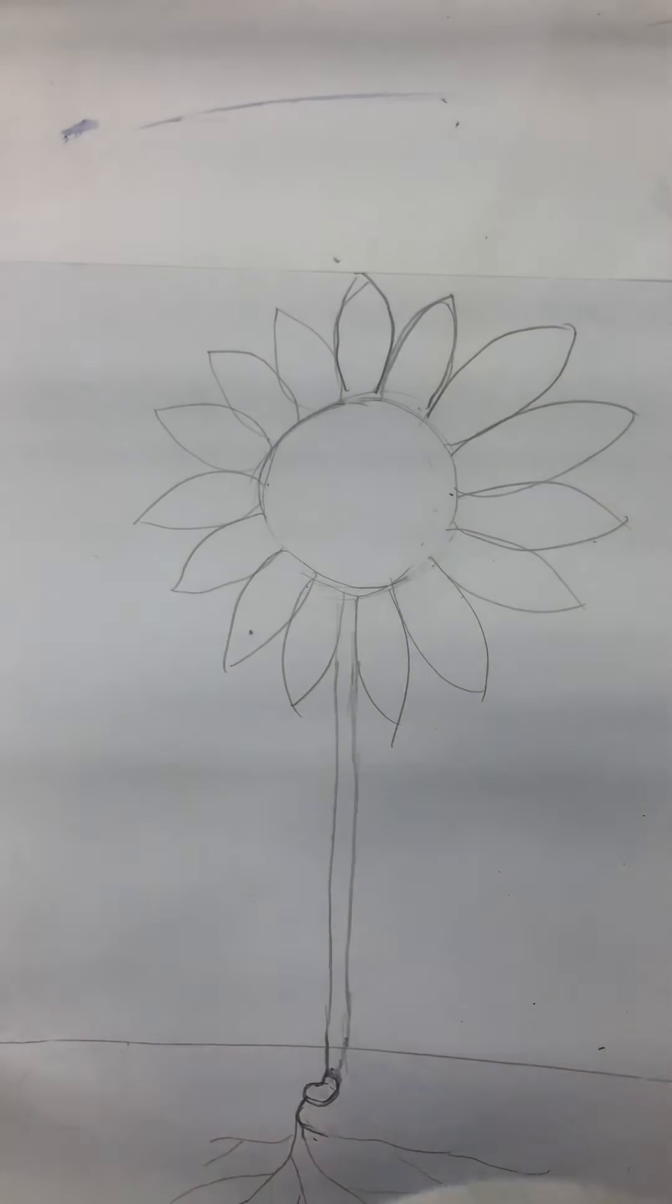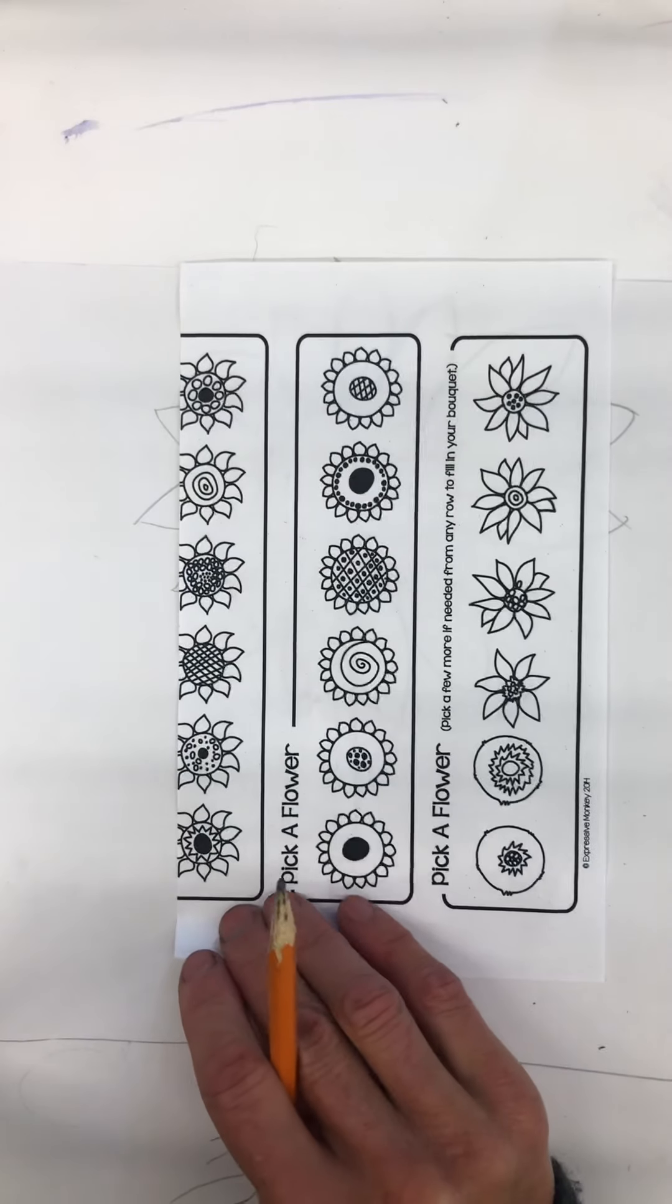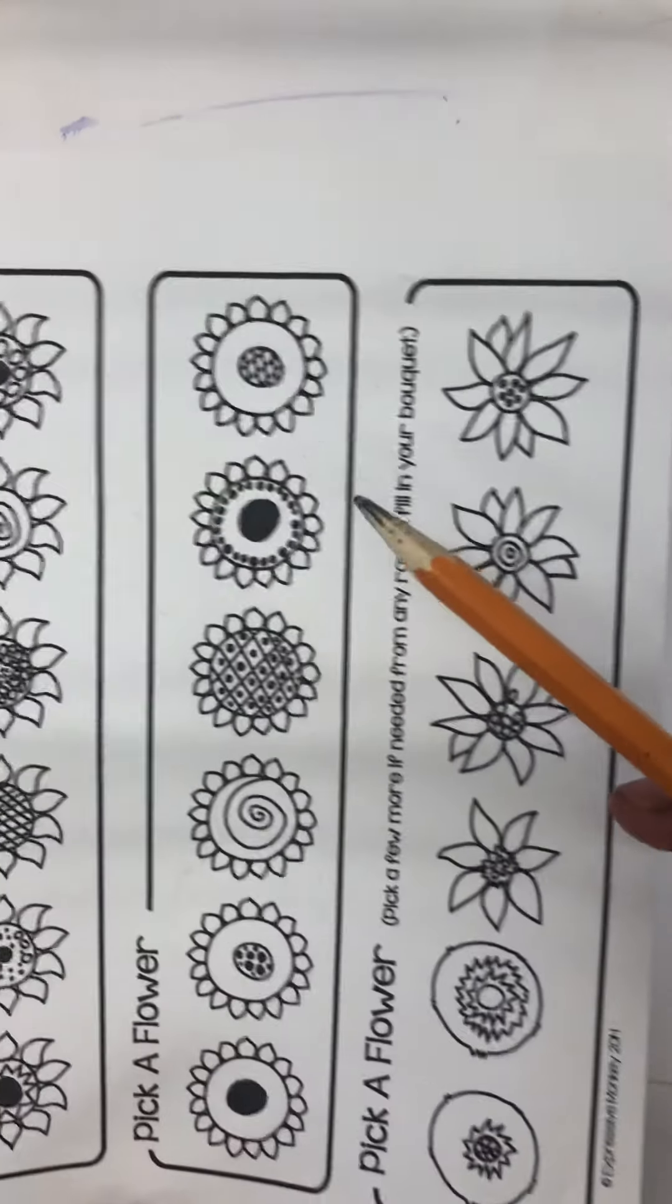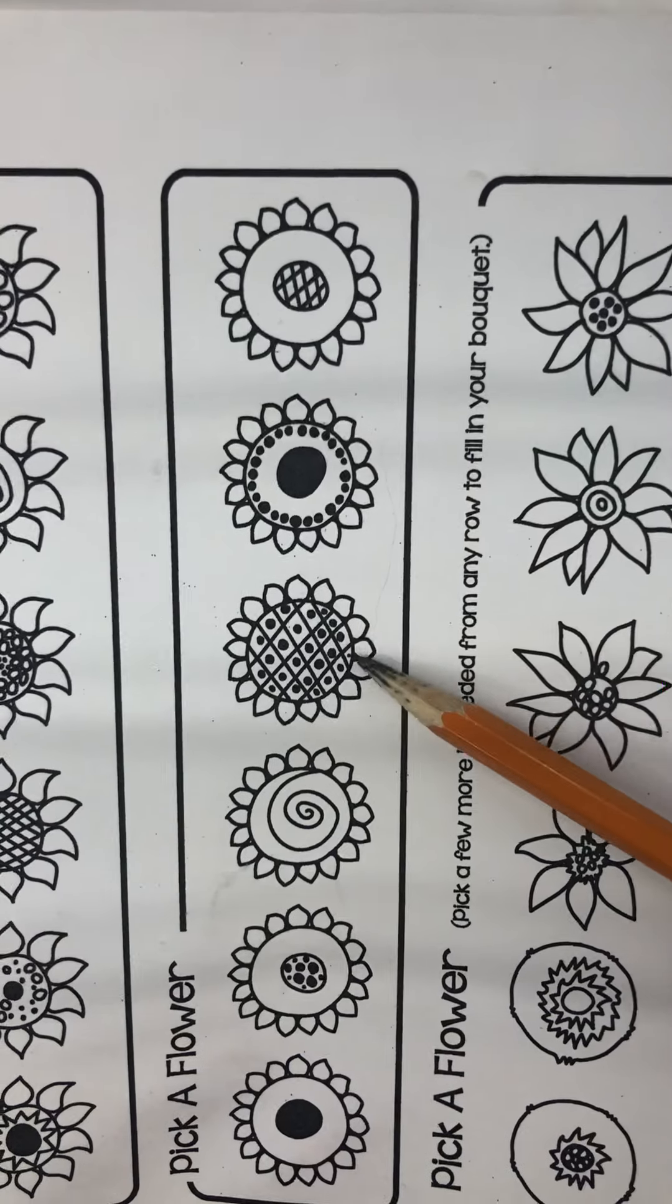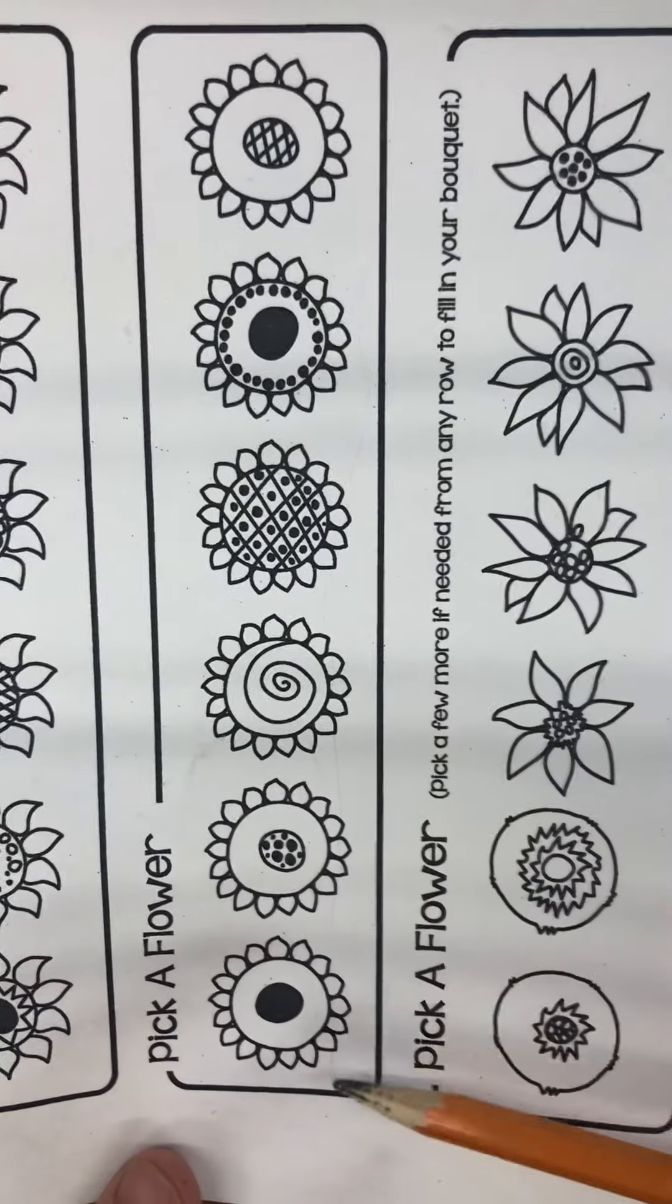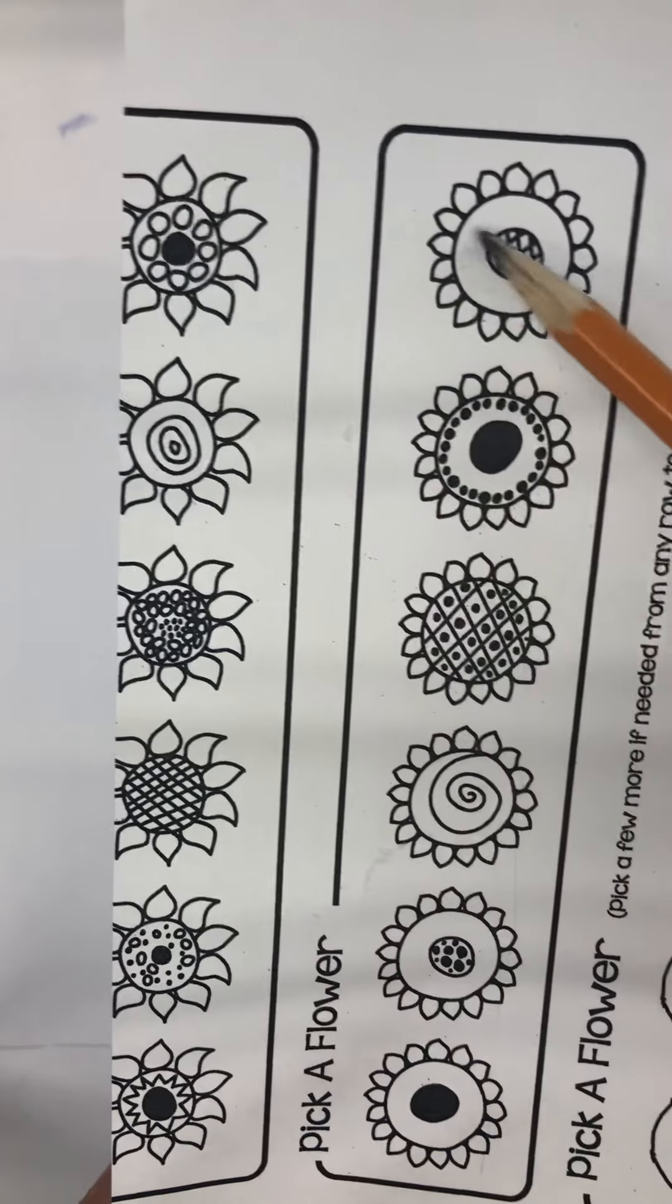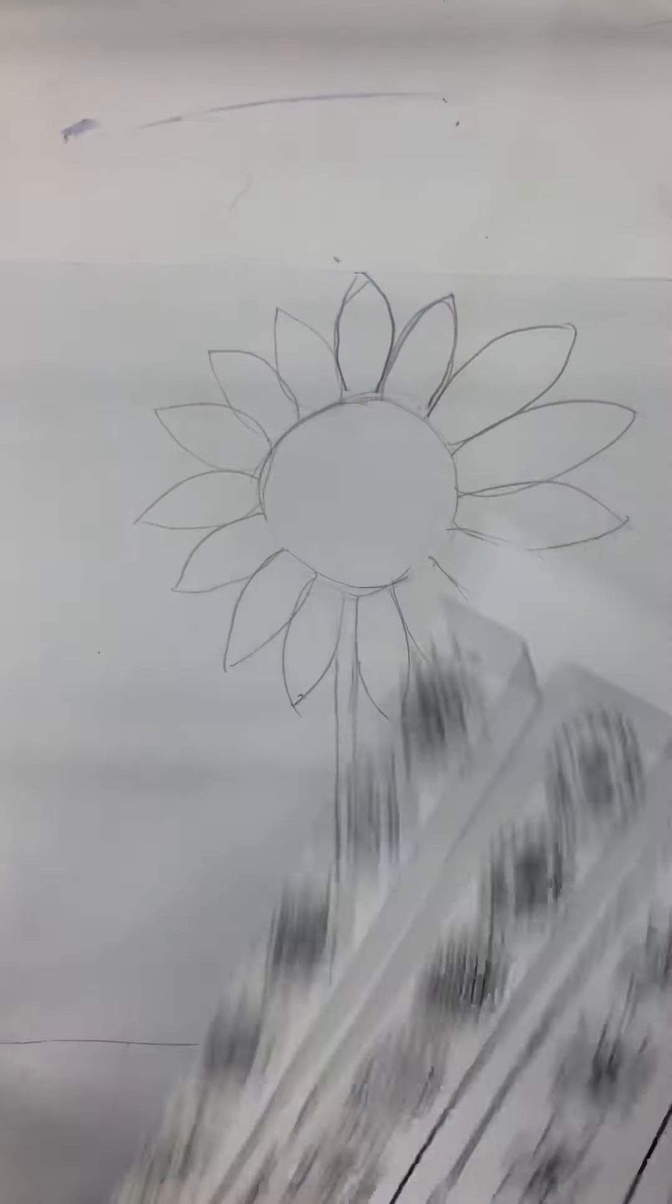And then inside your sketchbook, you'll also see all these different ways to make a sunflower. So maybe you could choose one of these centers. See all the different seeds inside there? So those are all different ways you could do it or make up your own, of course.